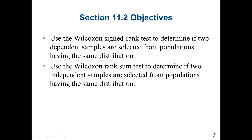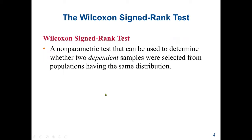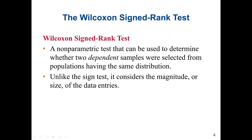The Wilcoxon signed-rank test will not ignore the magnitude of our data, as compared with the sign test. It is a non-parametric test that can be used to determine whether two dependent samples were selected from populations having the same distribution. Unlike the sign test, it will consider the magnitude or size of the data entries — that is the advantage of the Wilcoxon signed-rank test.